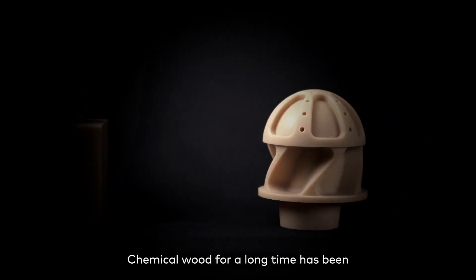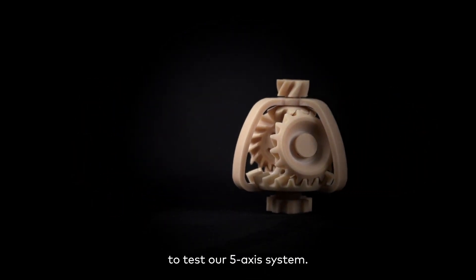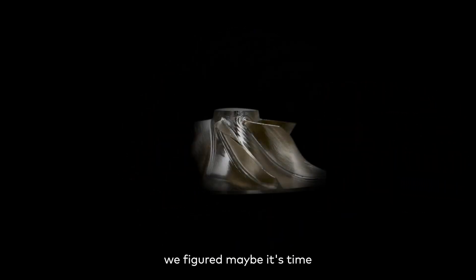Chemical wood has been the major material we use to test our 5-axis system for a long time. As the system is getting more and more stable, we figured maybe it's time to give it a shot with a metal workpiece.